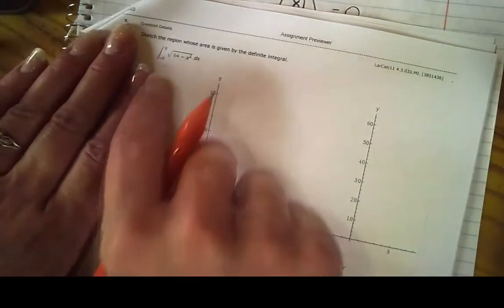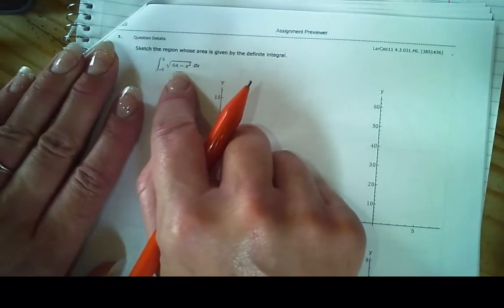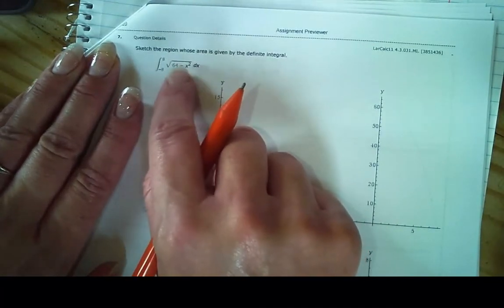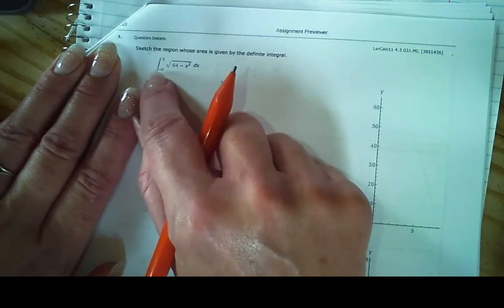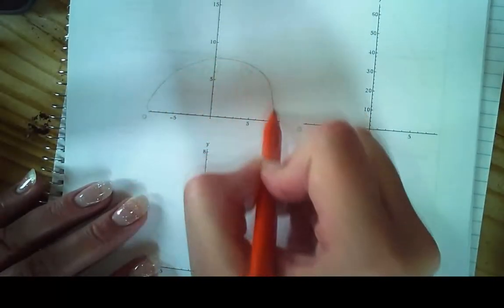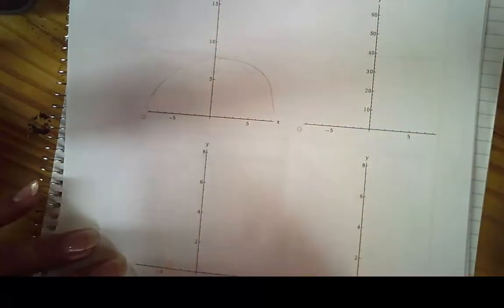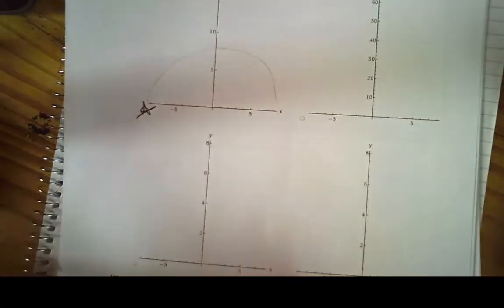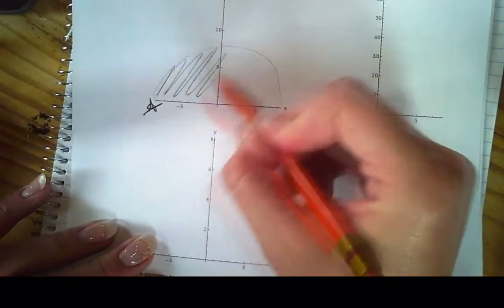So this is going to be another one you should be familiar with. Remember that this is the top half of a circle, and we did that back in chapter 2. This is the top half of a circle, and you're going to have a radius of 8. So it goes from negative 8 to positive 8. So here's a semicircle. Here's from negative 8 to positive 8. That's an upside-down parabola. That's another upside-down parabola, and that's another upside-down parabola. So it's got to be this one.